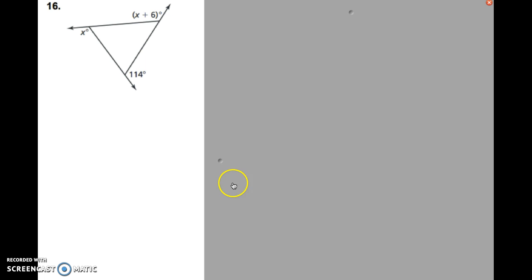So with that being said, let's take a look at how to do this. We have x, we have x plus 6, and we have a known degree of measurement right down here, the 114. So we already have an equation.